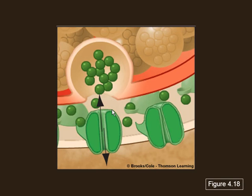Inhibitory synapses can involve either chloride or potassium. Chloride is more abundant outside, so it moves into the cell. Potassium is more abundant inside, so it moves out. Either way, the result is the same: chloride coming in is negative, making the inside more negative. Potassium going out removes a positive, also making the inside more negative. So whether you bring one chloride in or take one potassium out, you change it by one negative unit on the inside.